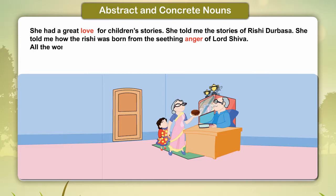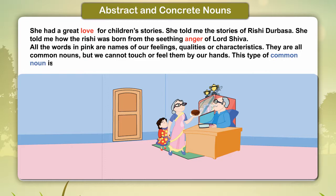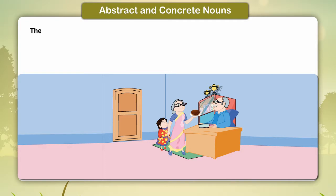All the words in pink are names of our feelings, qualities and characteristics. They are all common nouns. But we cannot touch or feel them with our hands. This type of common noun is called an abstract noun.